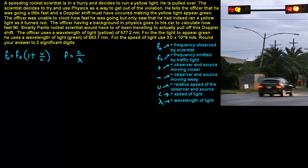The officer uses a wavelength of light of 577.2 nanometers. For the light to appear green, he uses a wavelength of light of 563.7 nanometers. For the speed of light, use 3 times 10 to the 8th meters per second and round your answer to two significant digits.